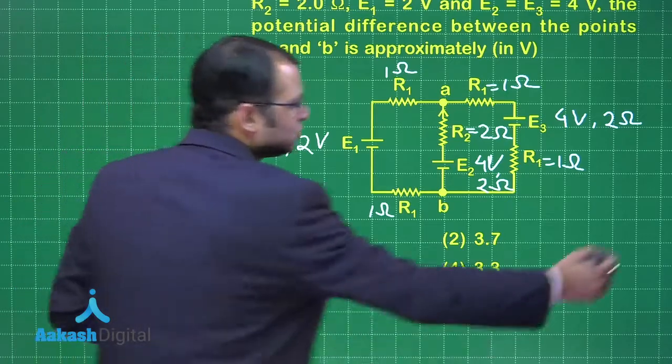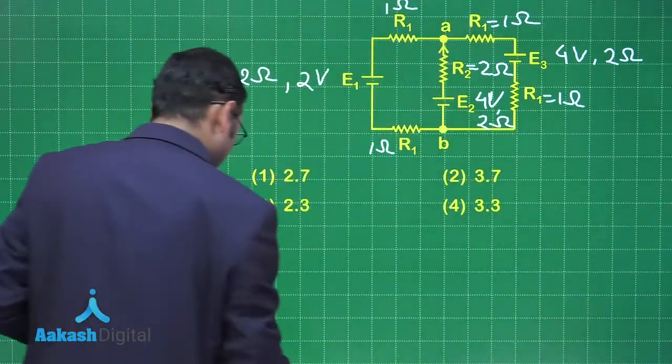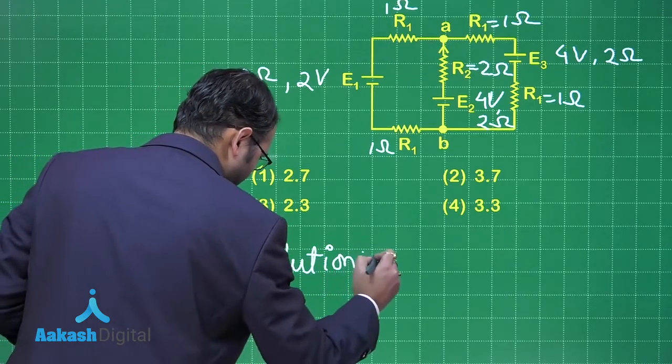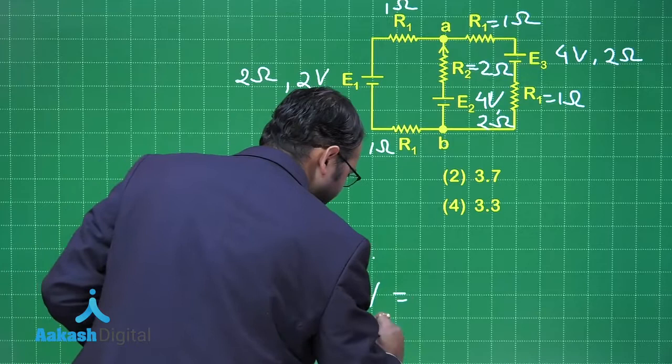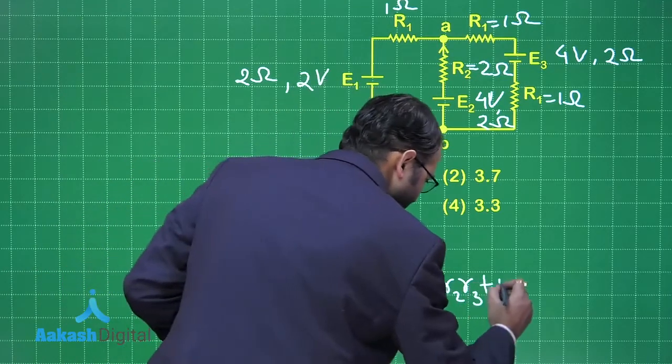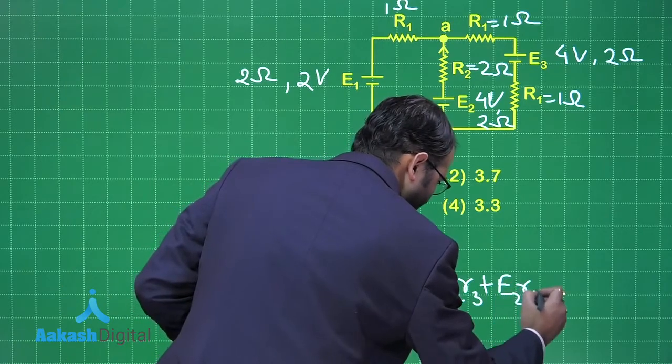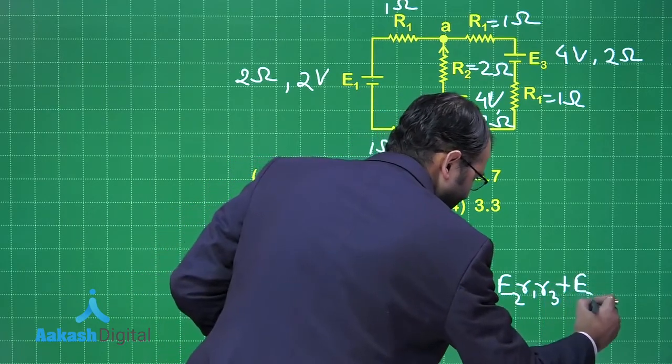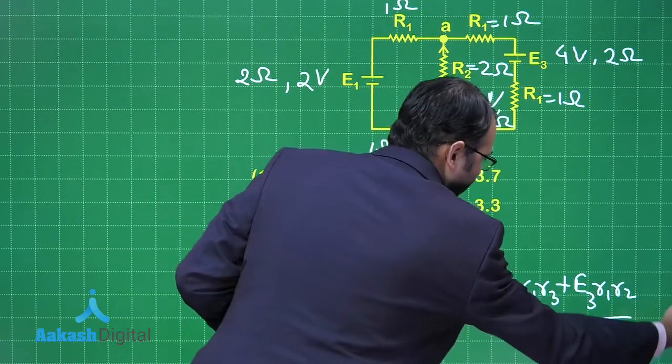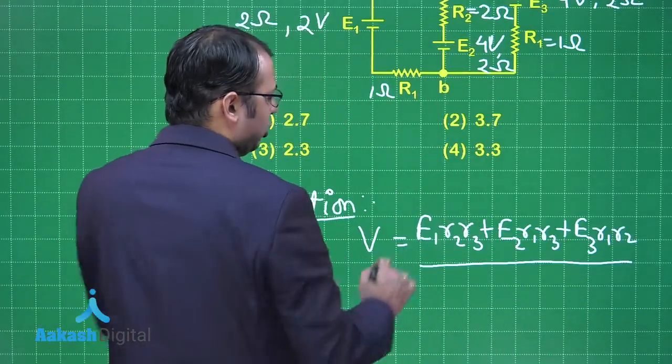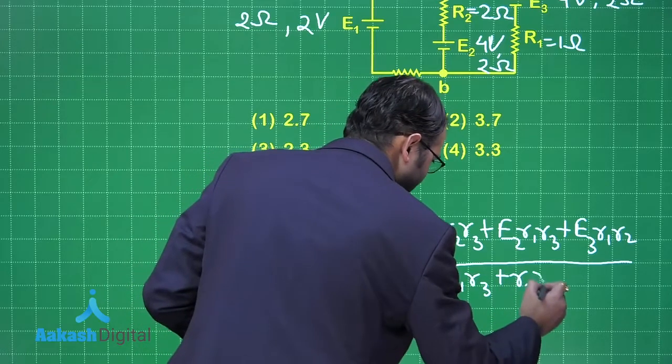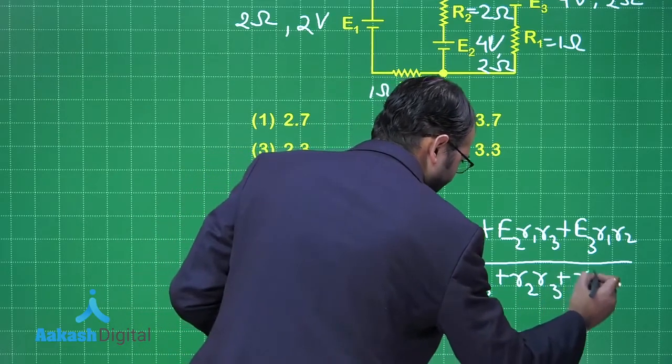So now I have 3 cells with 3 EMFs and all have internal resistance of 2 ohms. Now it's easy to solve using a single formula. The potential difference we are seeking would be E₁R₂R₃ plus E₂R₁R₃ plus E₃R₁R₂ divided by all combinations of R: R₁R₃ plus R₂R₃ plus R₁R₂.